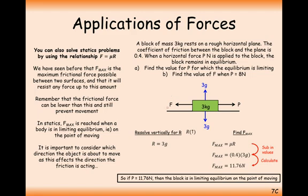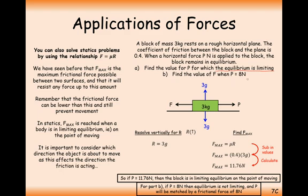So if these two forces are perfectly balancing and the particle is in limiting equilibrium, then P has to equal 11.76. If P crept up to 11.77, it would start to pull it to the right. For part B, find the value of F when P equals 8. Since 8 is less than the maximum value that friction can be, friction would just take the value 8 newtons, as friction is only there to balance out the force to stop it from moving.